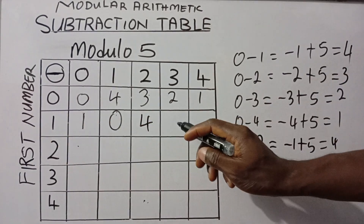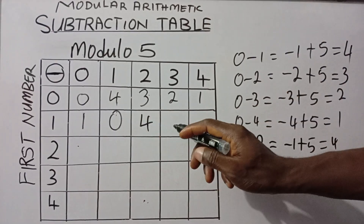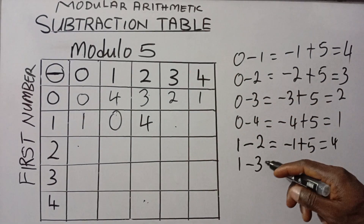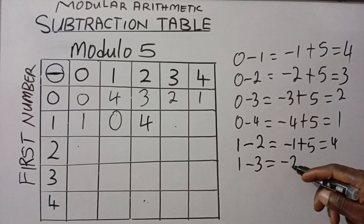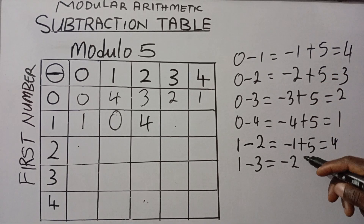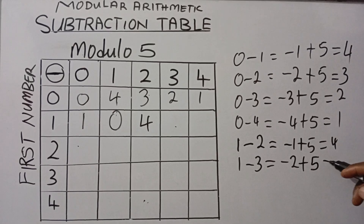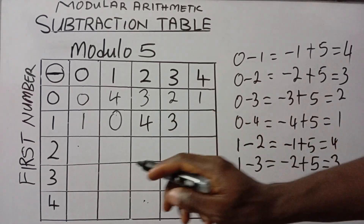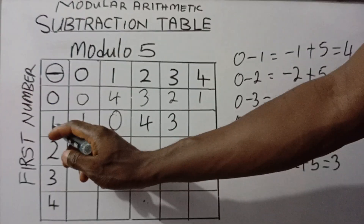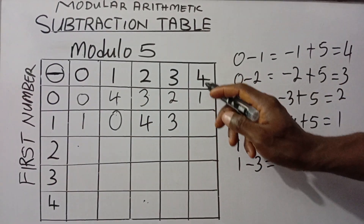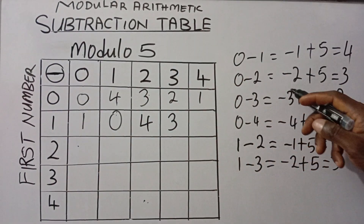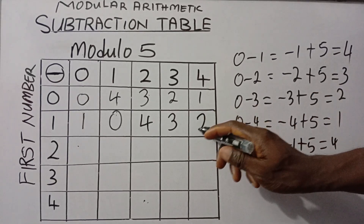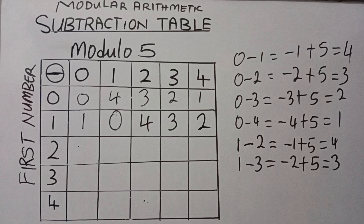For this part, 1 minus 3 will give us minus 2, just like the previous case, so we add plus 5, and that will give us 3. So we're going to have 3 here. For this part, 1 minus 4 will give us minus 3 — just like we had minus 3 earlier — so minus 3 plus 5 will give us 2. So this is exactly how to make the arrangements in a subtraction table in modular arithmetic.